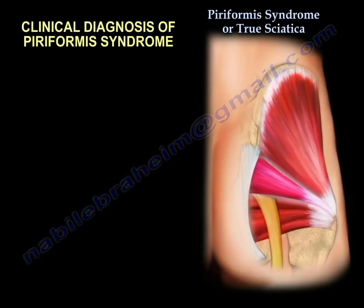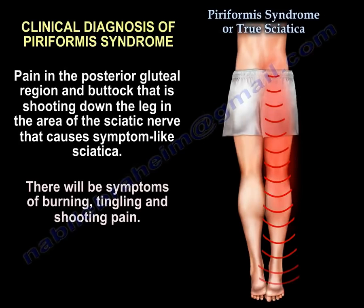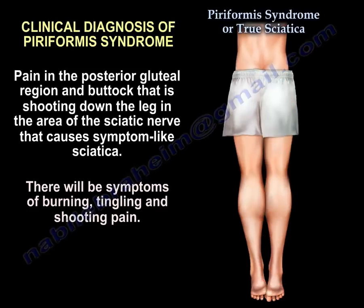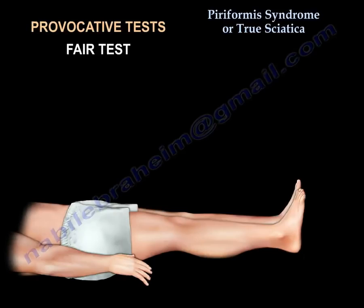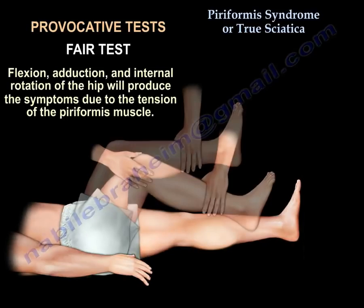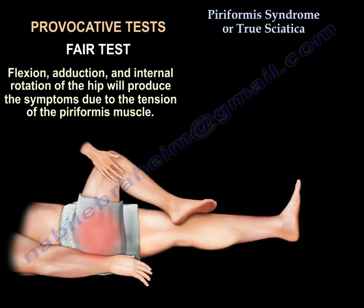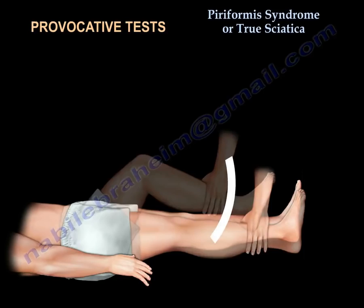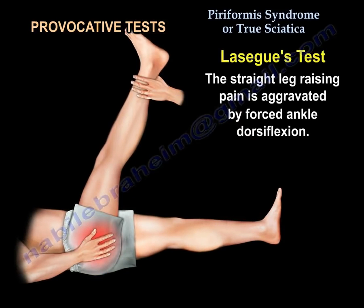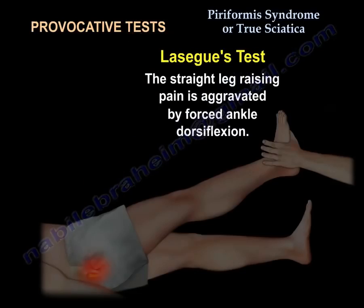For clinical diagnosis, there will be pain in the posterior gluteal region and the buttock, shooting down the back of the leg along the path of the sciatic nerve, causing sciatica-like symptoms with burning, tingling, and shooting pain. Provocative tests include the FAIR test — flexion, abduction, and internal rotation of the hip — which produces symptoms due to tension of the piriformis muscle. The Lasègue test, in which straight leg raising pain is aggravated by forced ankle dorsiflexion, can also be used.